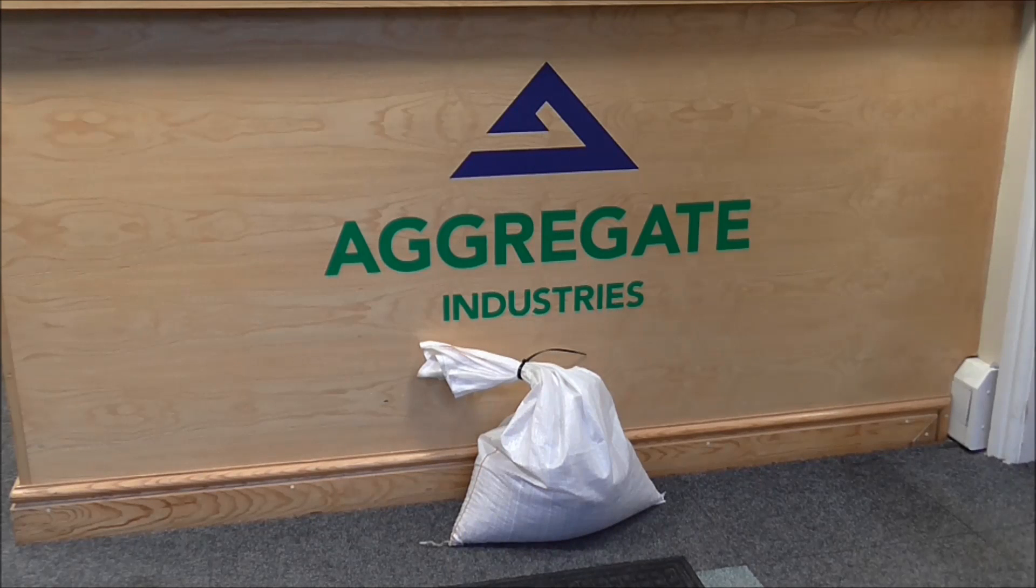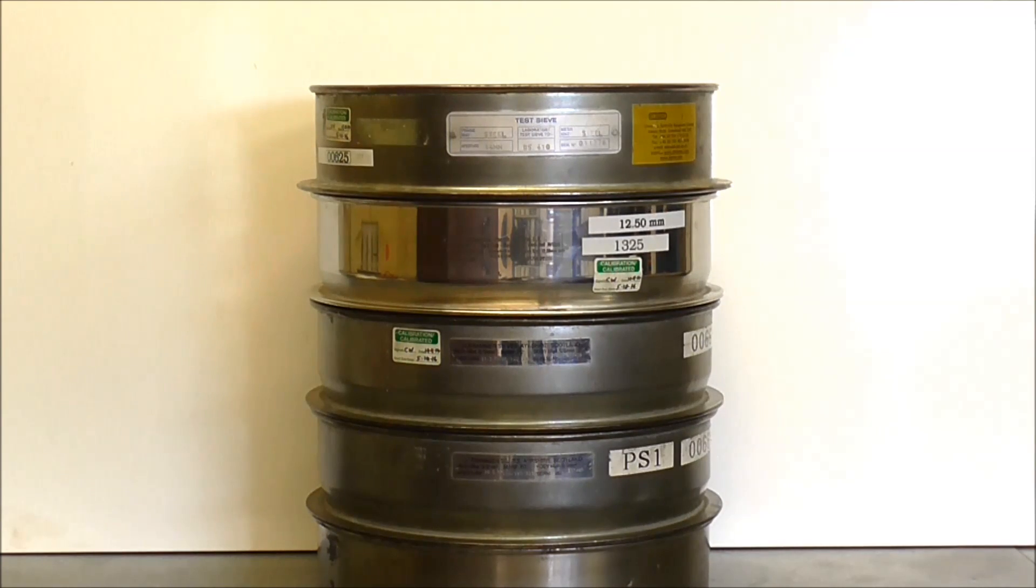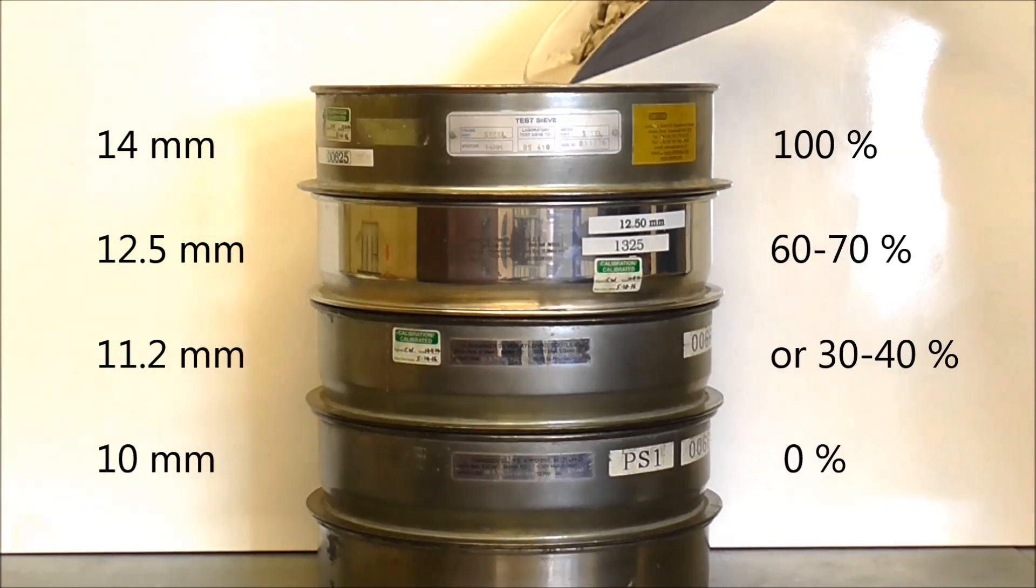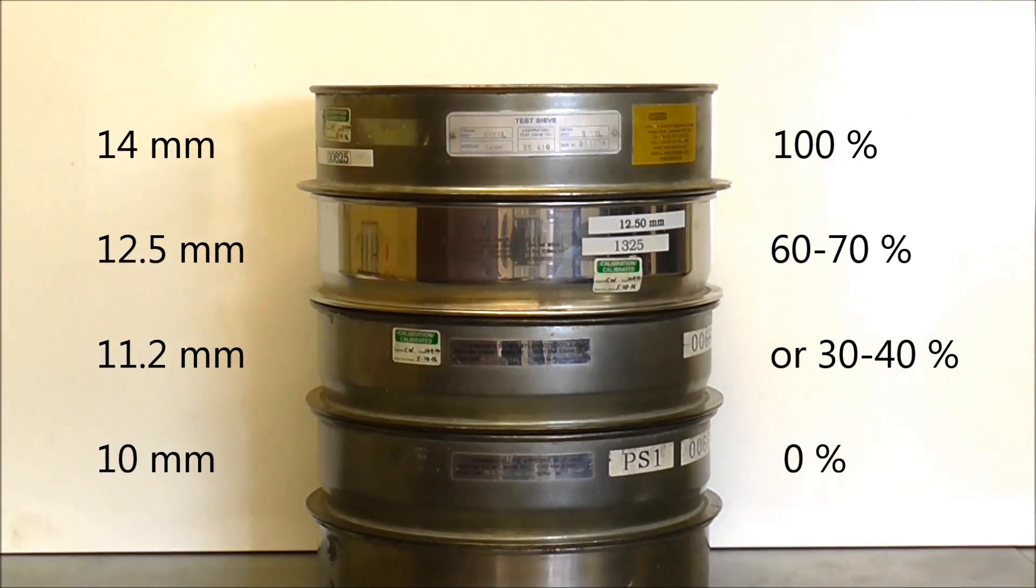The sample sent for testing must contain at least 15kg in the 10-14mm size range. Only material passing a 14mm and retained on a 10mm sieve is used. In addition to this, either 60-70% of this material must pass a 12.5mm sieve, or 30-40% must pass an 11.2mm sieve.